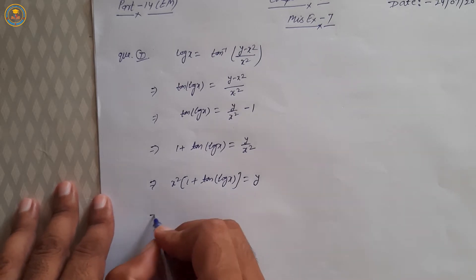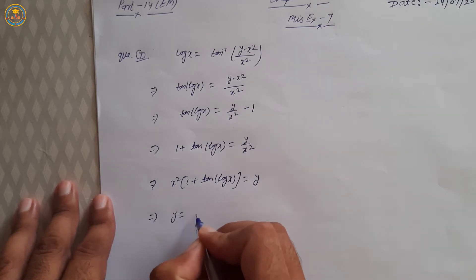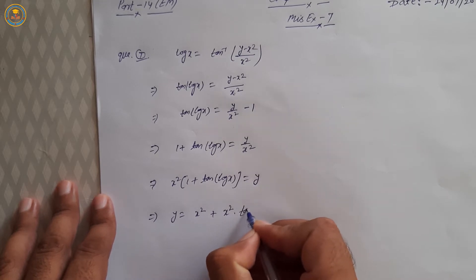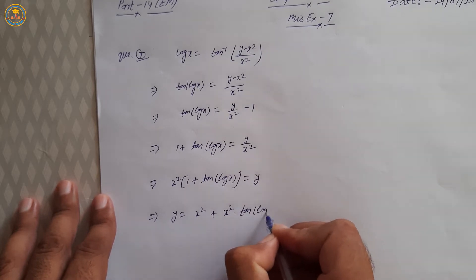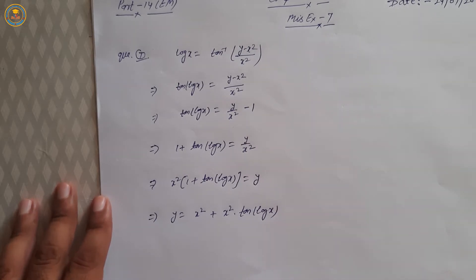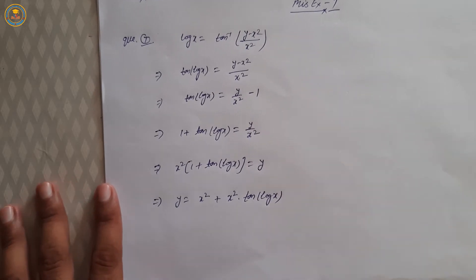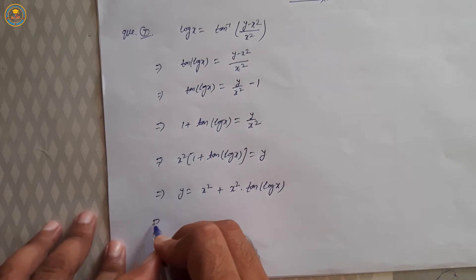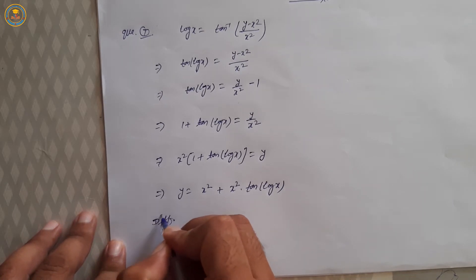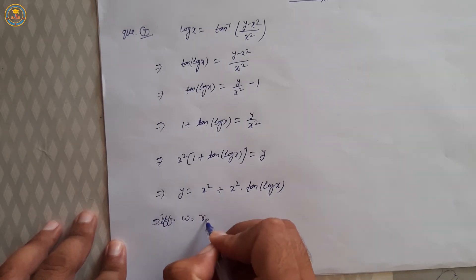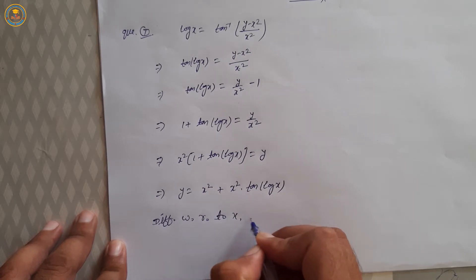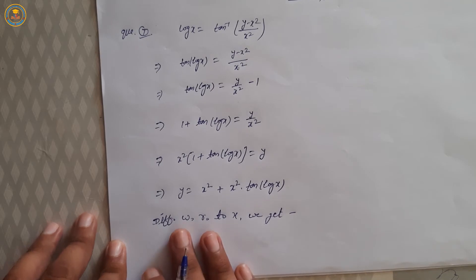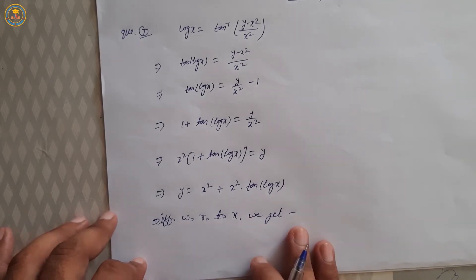Cross multiply: x² into (1 plus 10 over log x) is equal to y. It means y is equal to x² plus x² into (10 over log x). Now differentiate with respect to x.